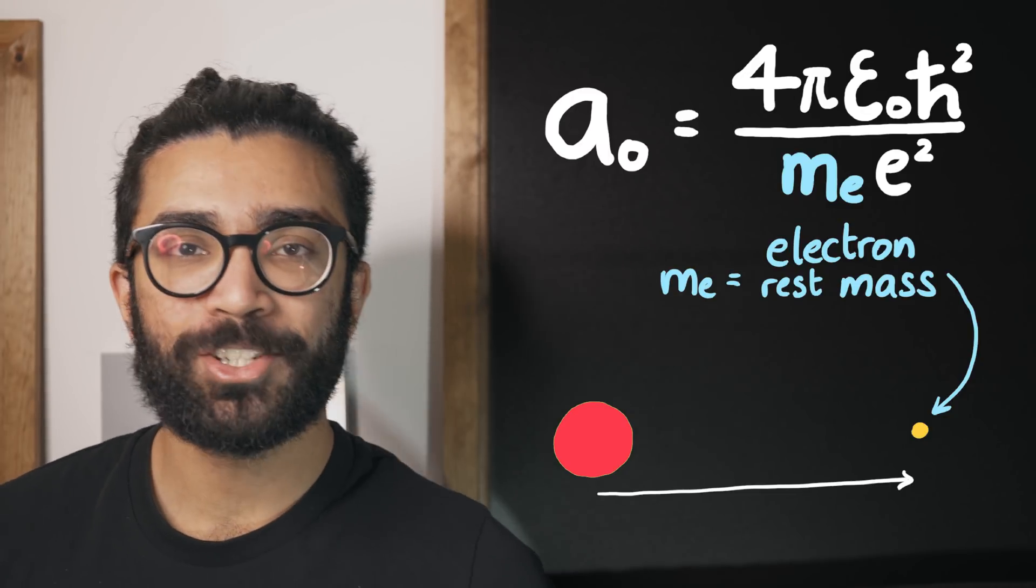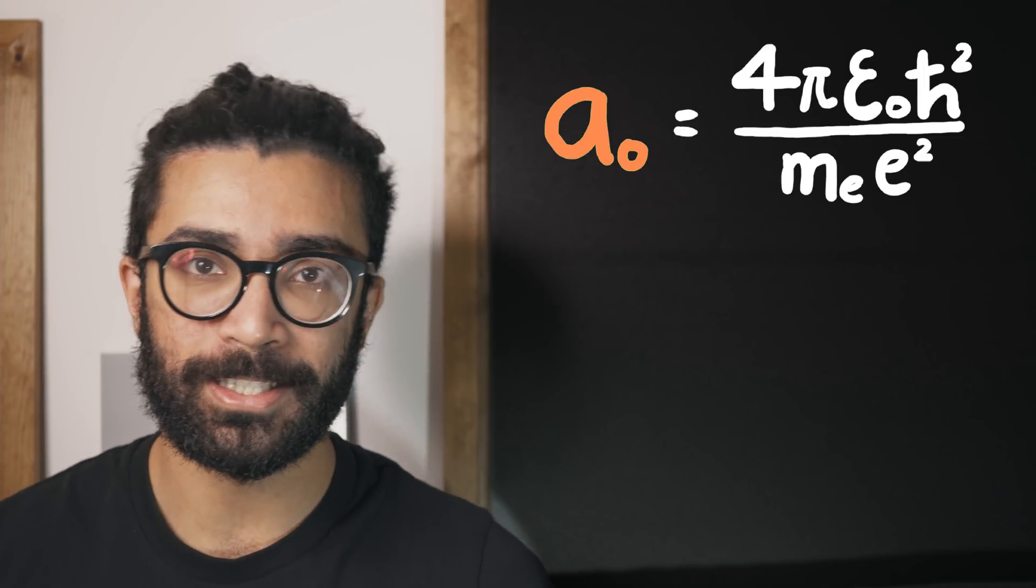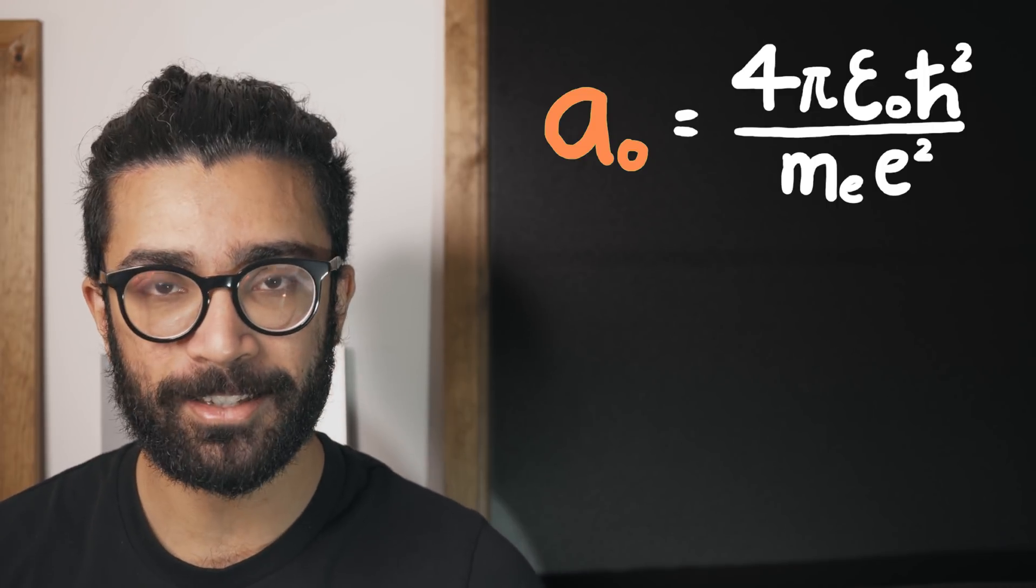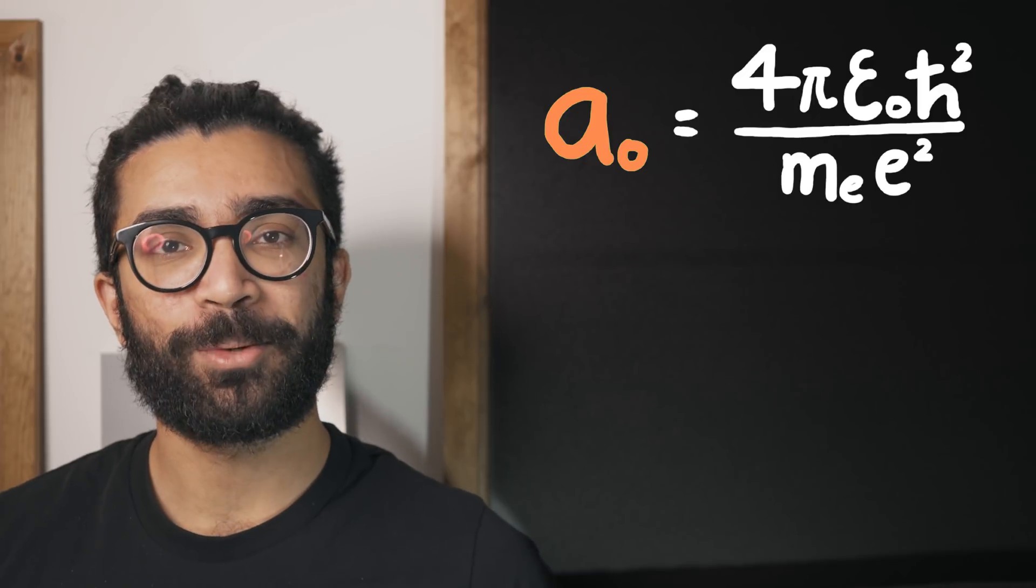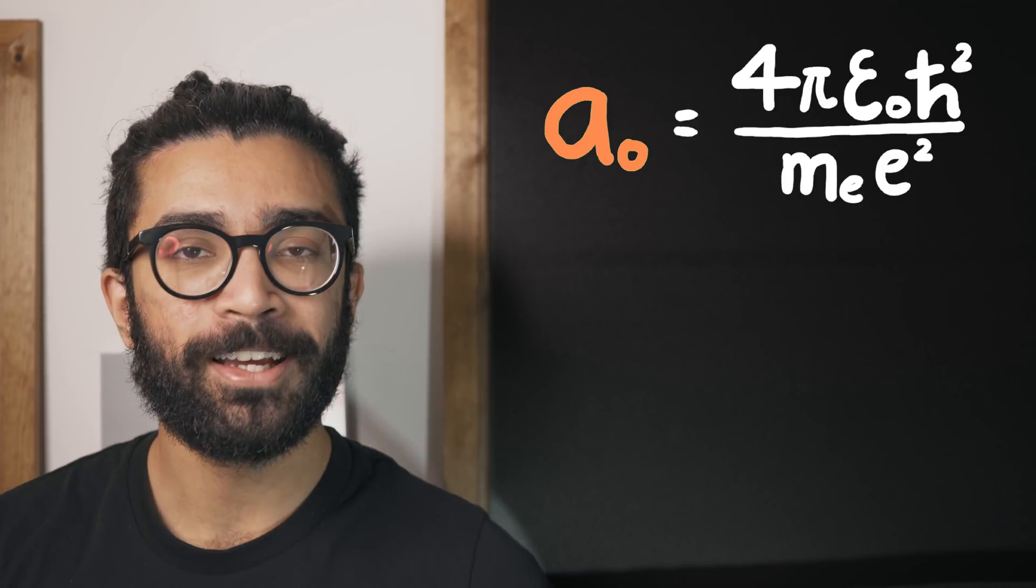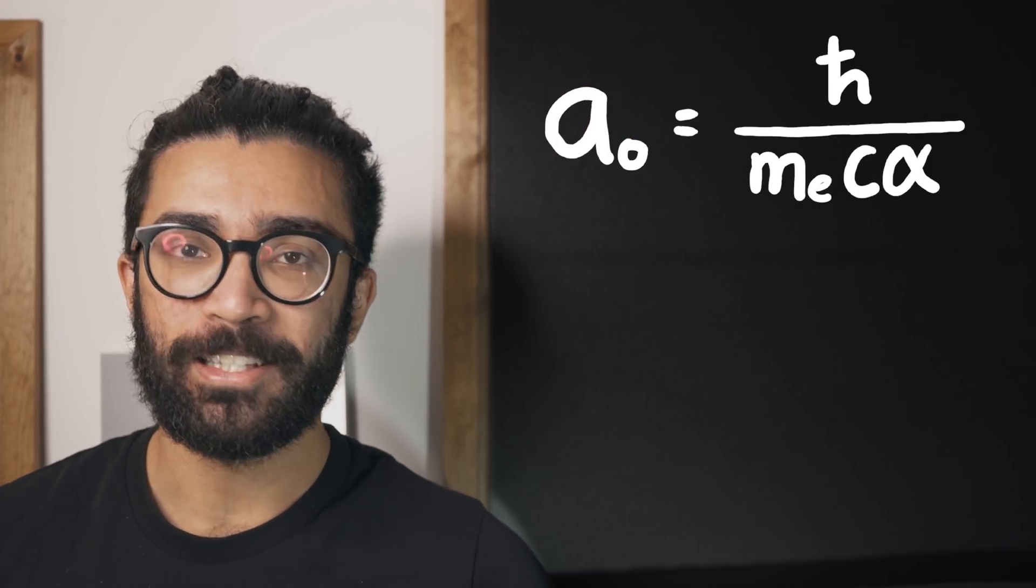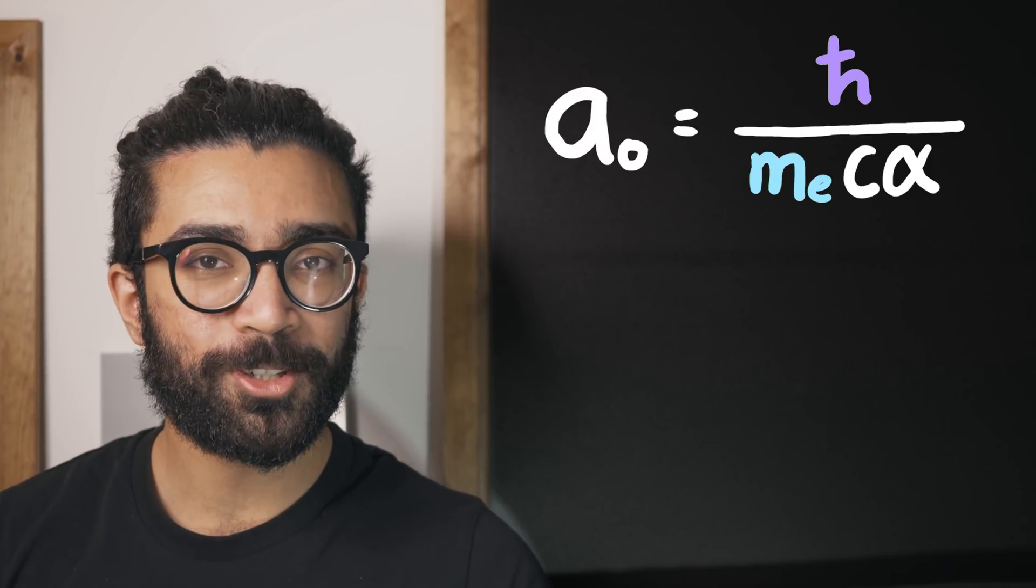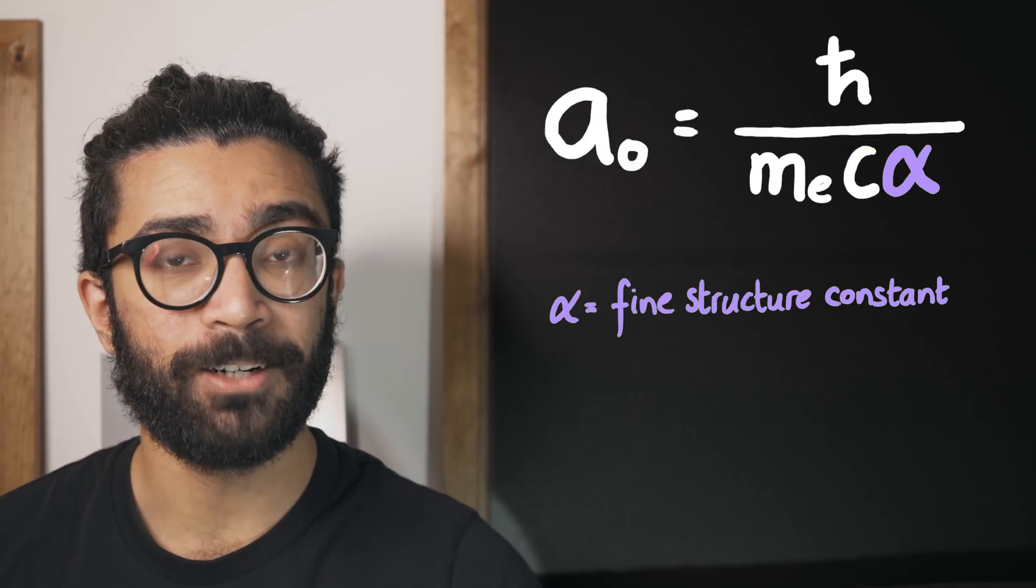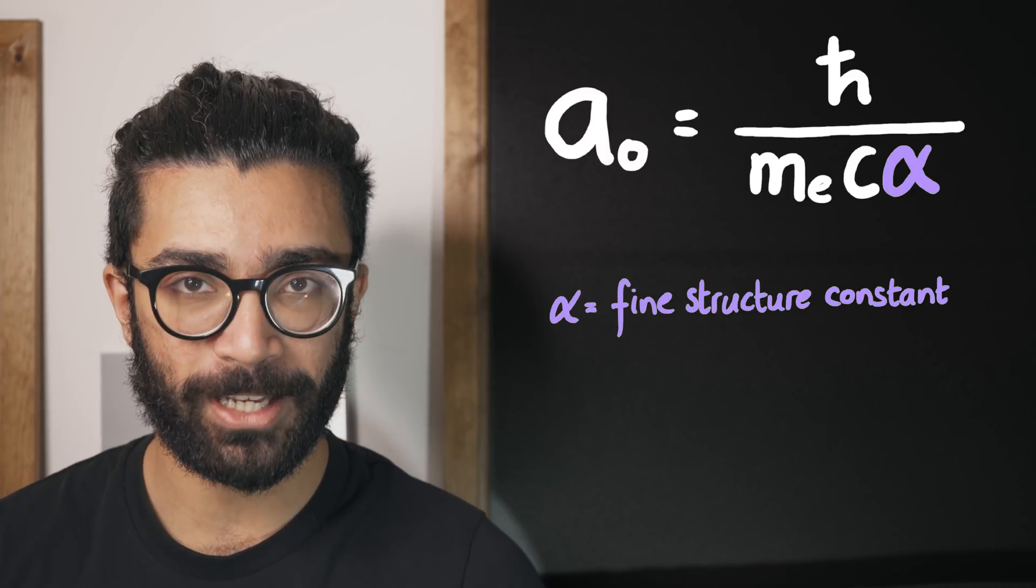It's also worth me quickly mentioning that this quantity can be written also in terms of other very important quantities, and the reason I keep bringing up these quantities is because we can see some very interesting links between different areas of physics. This expression that we've seen for a₀, the Bohr radius or the average distance between the proton and the electron, is also exactly equal to this quantity here. Again we see ℏ and mₑ, but this time we also see c which happens to be the speed of light in a vacuum. And α is defined as the fine structure constant, another very important constant in the theory of quantum mechanics.